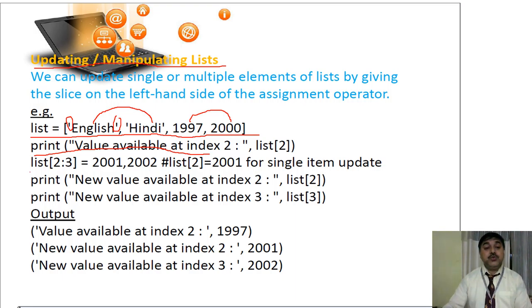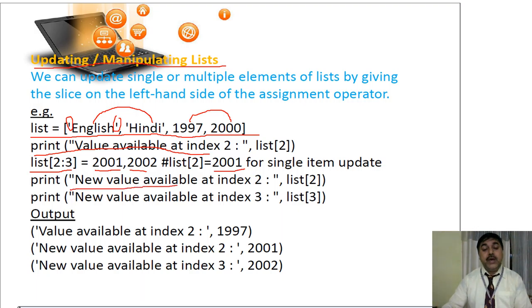Next, list[2:3] equals what? It will show 2001 and 2002. List[2] will show 2001 for a single item updated. Now print the new value available at index 2, and print the new value available at index 3. The value available at index 2 previously was this one.